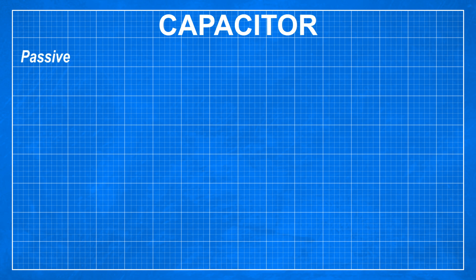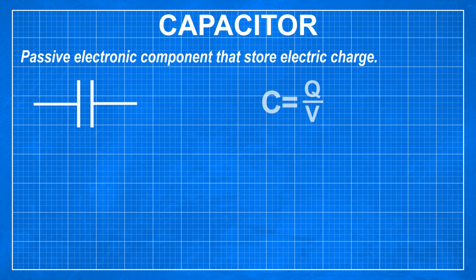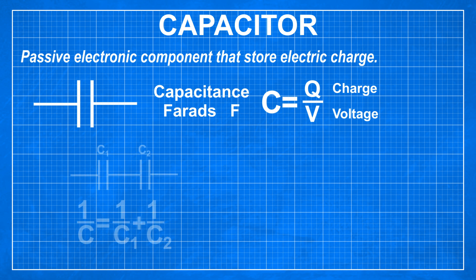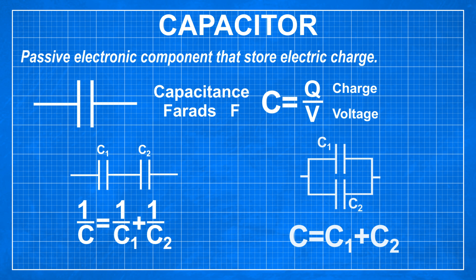Capacitors are passive electronic components that store electric charge. The most important characteristic of a capacitor is its capacitance which is capability to store a charge. It is measured in farads and can be calculated by dividing charge by voltage. When connected in series their capacitance lowers and in parallel it rises. Opposite to resistors.